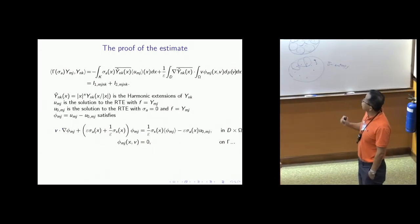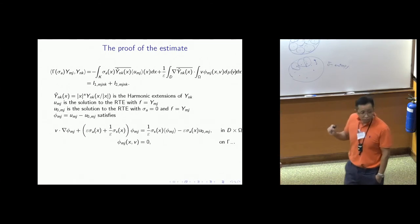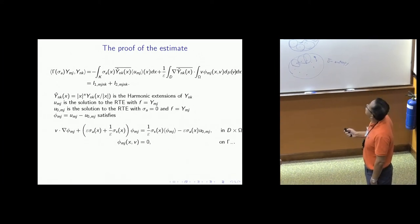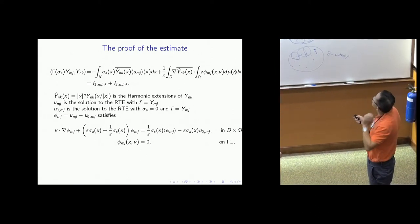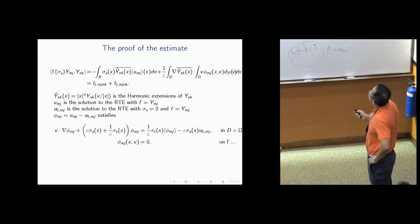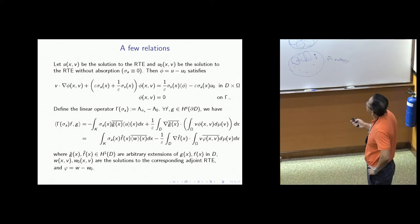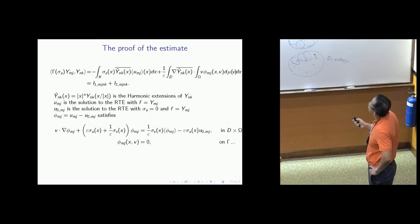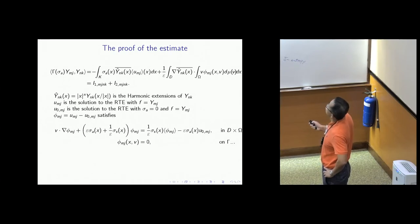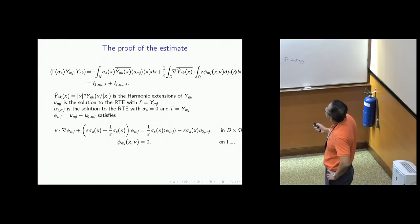There is no linearization here — everything so far is exact, and no term has been thrown away. There are two terms. The first is much easier to control because you can do a specific harmonic extension of the boundary function into the interior, making it like a diffusion problem. The second term involves the transport part and requires understanding the RTE solution behavior.